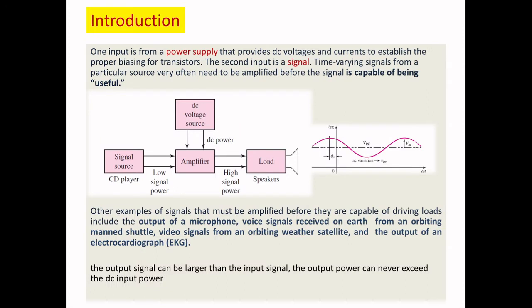The main block consists of a signal source, a DC voltage source, an amplifier, and a load — for example, a speaker — where the input might be a microphone or CD player. Input ranges are in millivolts, and the load voltage is in volts. The amplifier uses active components like BJT or MOSFET. DC biasing fixes the Q-point, and DC power is superimposed with the AC signal like a carrier.